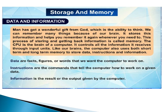The CPU is the brain of a computer. It controls all the information received through the input unit, like our brain. The computer also uses both short-term and long-term memory to store data, instructions, and information. Data are the facts, figures, or words that we want the computer to work on. Instructions are the commands that tell the computer how to work on a given data.